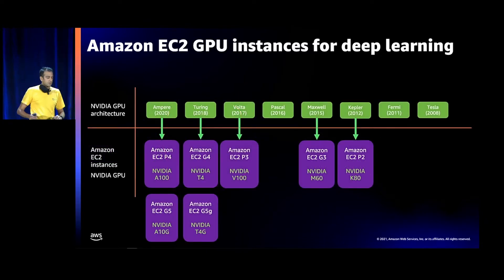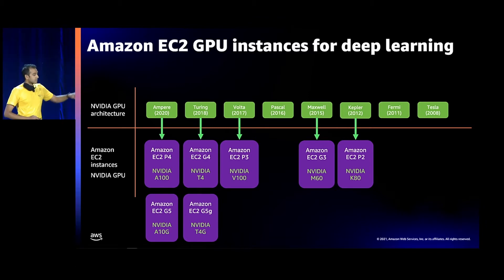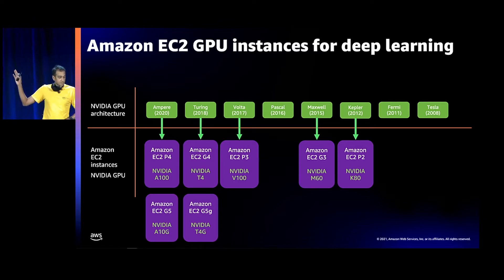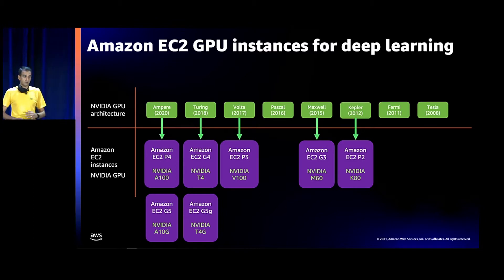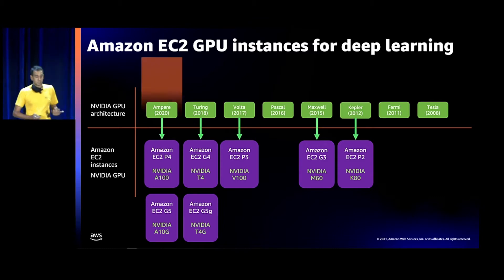Back to the timeline: over the years we've introduced all these generations. I don't recommend the older generation GPUs regardless of cost — not the Kepler or Maxwell architectures, the P2s and G3s — for machine learning. There are cost-effective options in the newer generations that we'll discuss today.